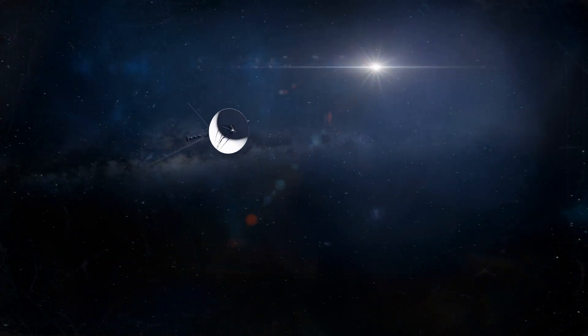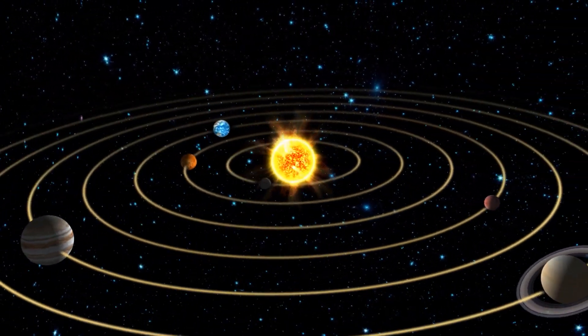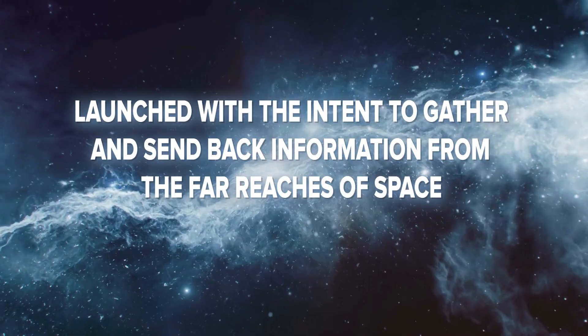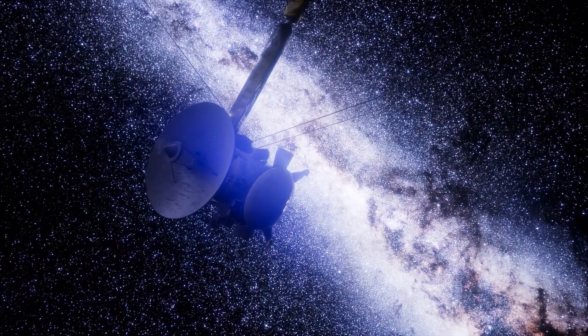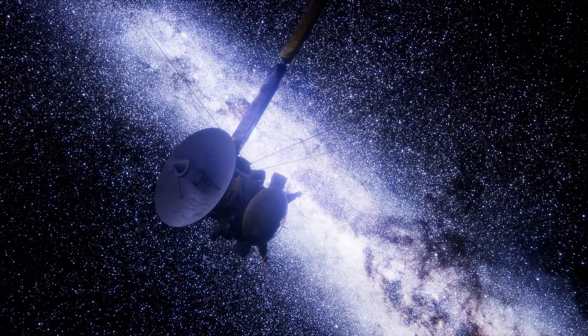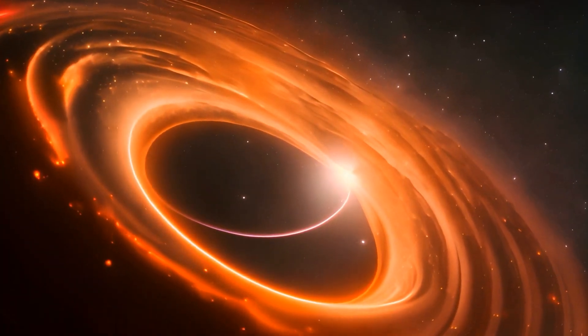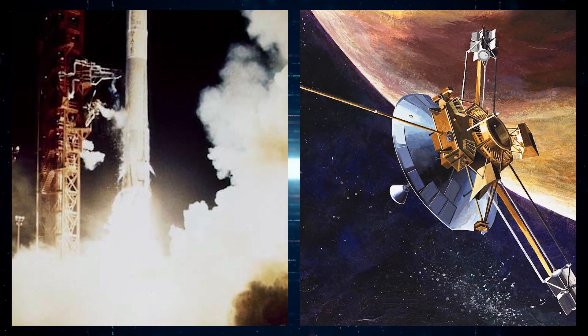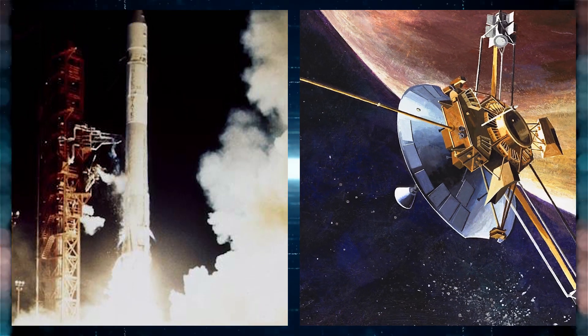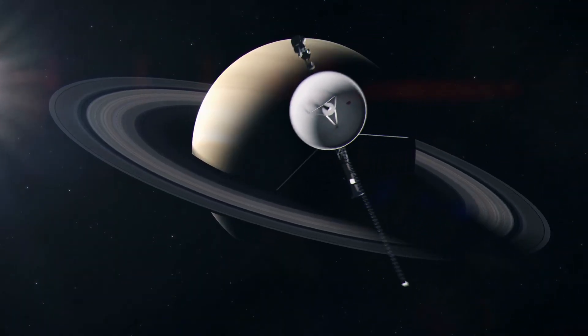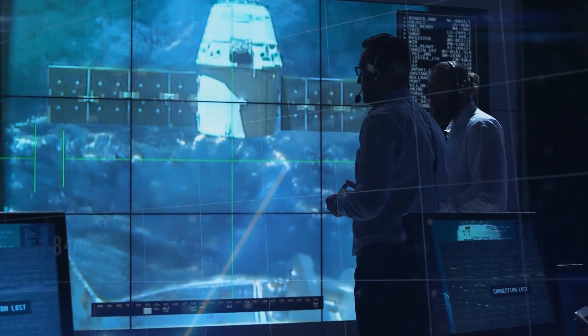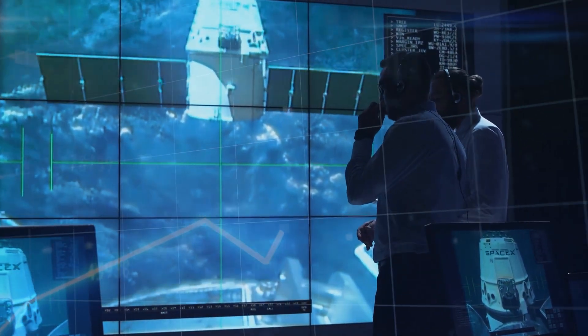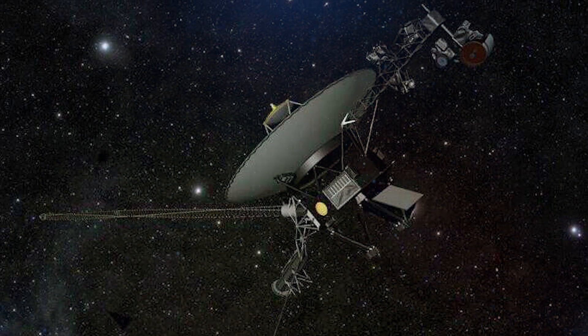Voyager 1 embarked on a journey to explore the vastness of our solar system and beyond. Launched with the intent to gather and send back information from the far reaches of space, it ventured farther than any other human-made object. As part of a broader initiative to understand our cosmic neighborhood, this mission followed in the footsteps of earlier explorers like Pioneer 10 and Pioneer 11, which had set the stage by visiting Jupiter and Saturn. However, the high costs associated with such ambitious missions led to a more focused approach, leading to the launch of Voyager 1.